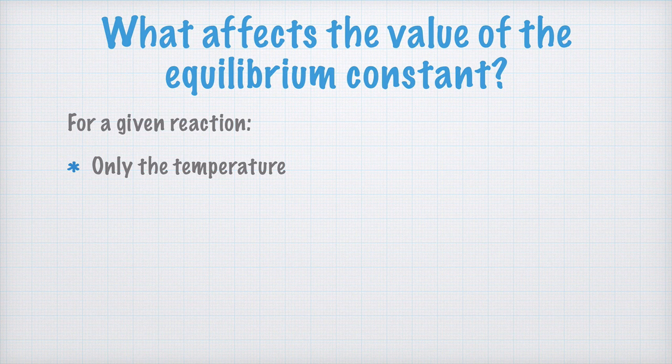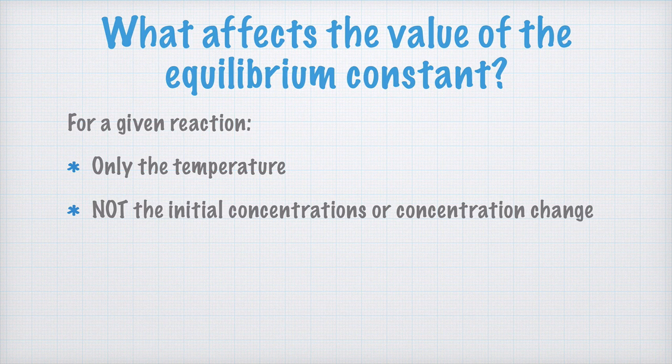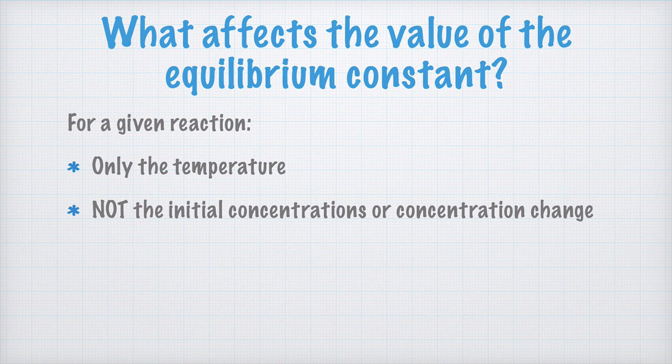Which concentrations we start with doesn't matter for the equilibrium constant, and neither does the presence of a catalyst. It is only the temperature that affects the equilibrium constant for a given reaction. If you change the temperature, you get a new equilibrium constant. But otherwise, the equilibrium constant remains constant.